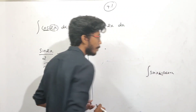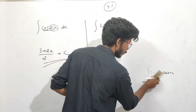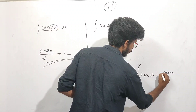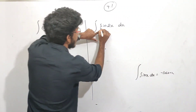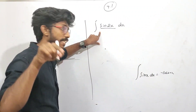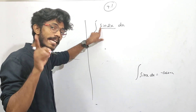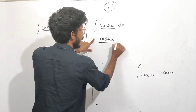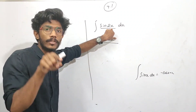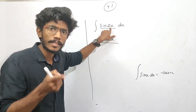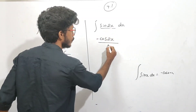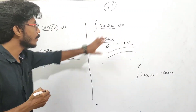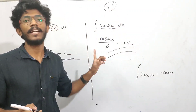Sin x dx is the integral of sin x plus c. So the integral of sin 2x: sin is integral of sin, that is minus cos 2x, divided by the derivative of the inner function. The derivative of 2x is 2. So the answer is minus cos 2x divided by 2, plus c. Clear?